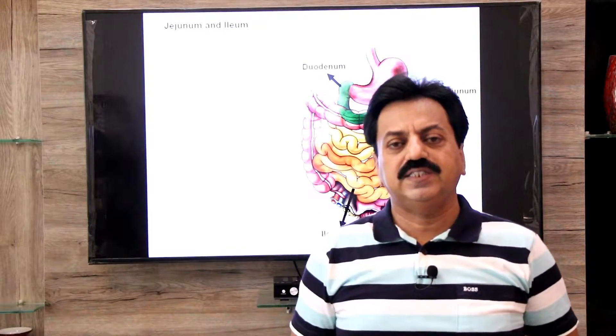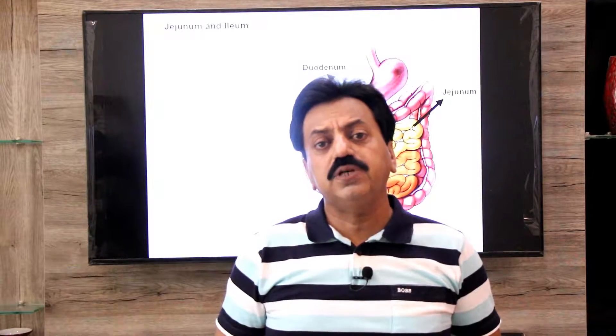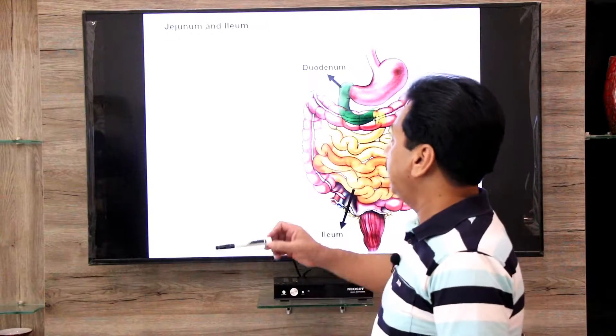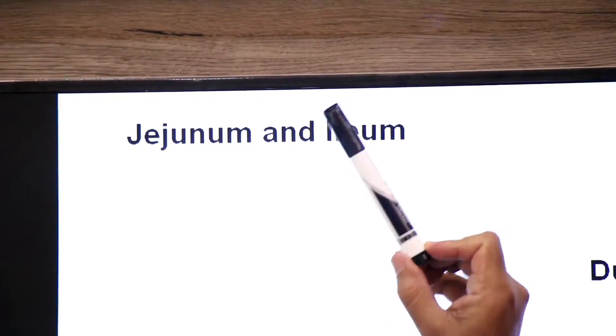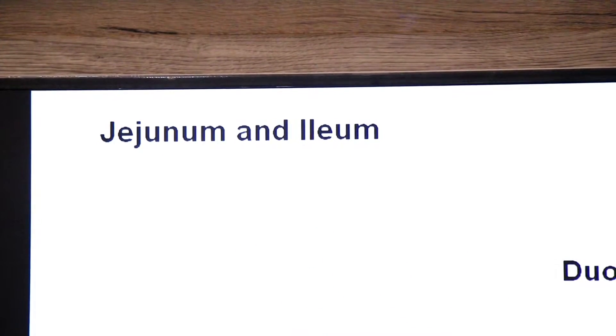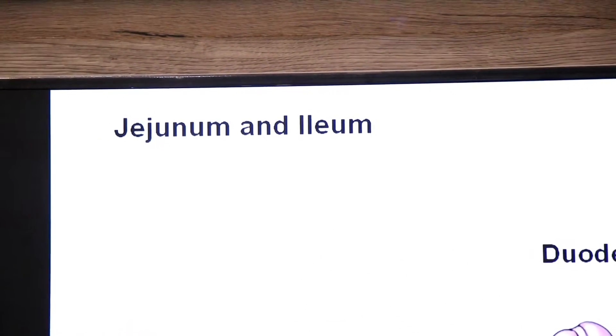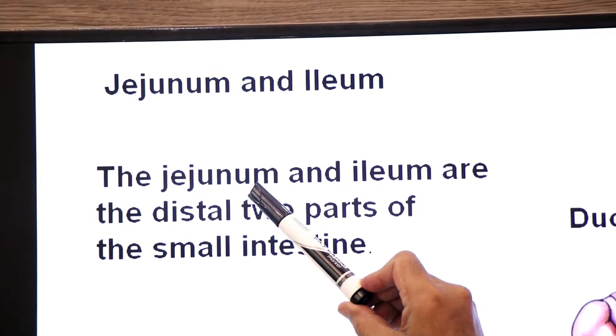Assalamu alaikum, namaste, dear students. Yesterday we discussed the first division of the small intestine, the duodenum. Today we are going to learn about the next two divisions of the small intestine: jejunum and ileum.